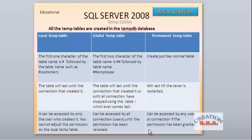The local temp table is created in the tempdb starting with the hash character, followed by the name of the table. The global temp table is also created in tempdb — you create a global temp table starting with two hashes followed by the table name. A permanent temp table is created just like a normal table in the tempdb.